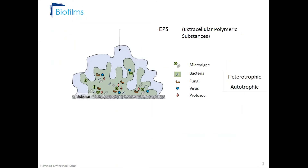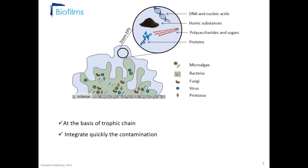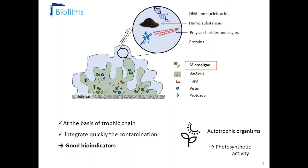Biofilms are composed of heterotrophic and autotrophic microorganisms like microalgae, algae, fungi, and bacteria. All these microorganisms are embedded in the EPS matrix, which are extracellular polysaccharidic substances. This matrix is more particularly composed of DNA, nucleic acids, polysaccharides, and proteins. Biofilms are the base of the trophic chain and are able to integrate and react quickly to contamination, which is why they are considered good bioindicators.